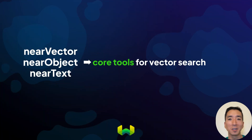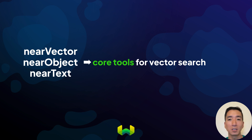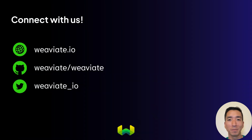Vector search is a core capability of Weaviate, so if you understand near-vector, near-object, and near-text, you'll be well-equipped to perform powerful searches with the right tools. Thanks for watching, and we'll see you soon.